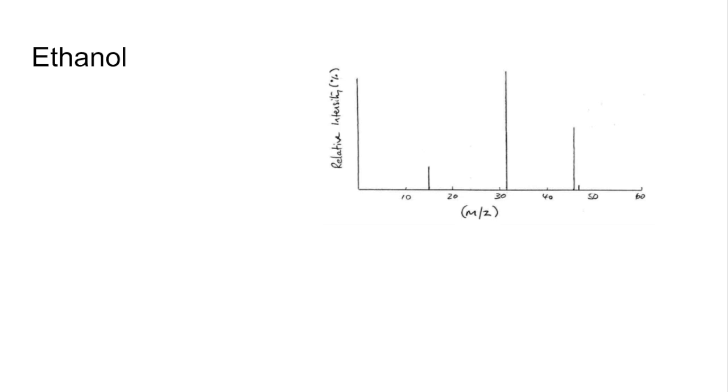So if we look at an actual spectrum now, this is for ethanol, and we'll try and identify all of these peaks here and give some equations for the processes that have taken place. So the first thing to say is, there's the molecular ion peak. Now we know that it's ethanol, so we know that the MR is 46. So this peak here at 46 is due to the original molecule minus the electron.